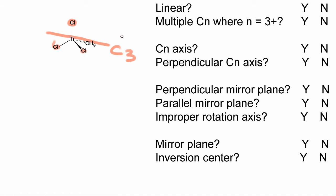Going through the flowchart to identify the correct point group: first, we can rule out that it's not a linear molecule, so that's a no. The next question is do we have multiple Cn axes where n is equal to three or higher? Looking at the molecule, we have one C3 axis but we don't have any more that are capable of providing equivalent positions, so again this is also no.